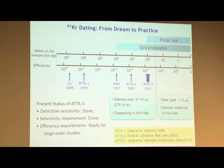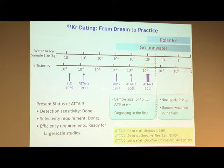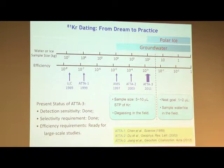A very important characteristic for any application is the sample size — the more efficient the atom trap, the less sample needed from the field. This is a ruler that measures our progress: as efficiency goes up, sample size goes down. In 1969, Lussli and Erschke had very low efficiency. There was one AMS effort, and we started at 10⁻⁷ efficiency. Today we've improved to 10⁻³, meaning we need about 100 liters of water or 50 kilograms of ice for an analysis. That's comfortable for groundwater dating and we are just touching usefulness for polar ice.